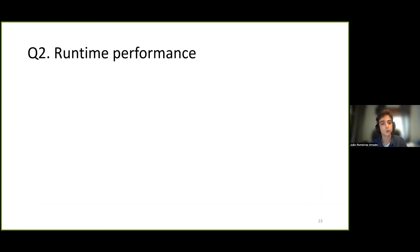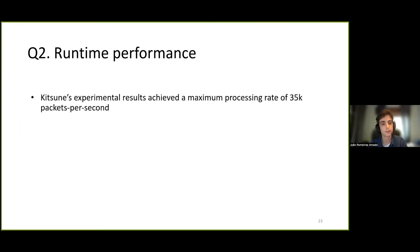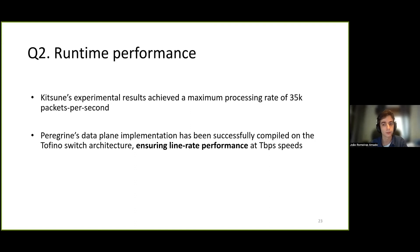The evaluation of runtime performance on a programmable switch is still ongoing work, but I'd like to highlight two points. First, Kitsune's implementation achieved a maximum processing rate across all components of 35,000 packets per second. By comparison, Peregrine's data plane implementation has been successfully compiled for the Tofino switch, which guarantees line rate performance on the data plane at terabit per second speeds.